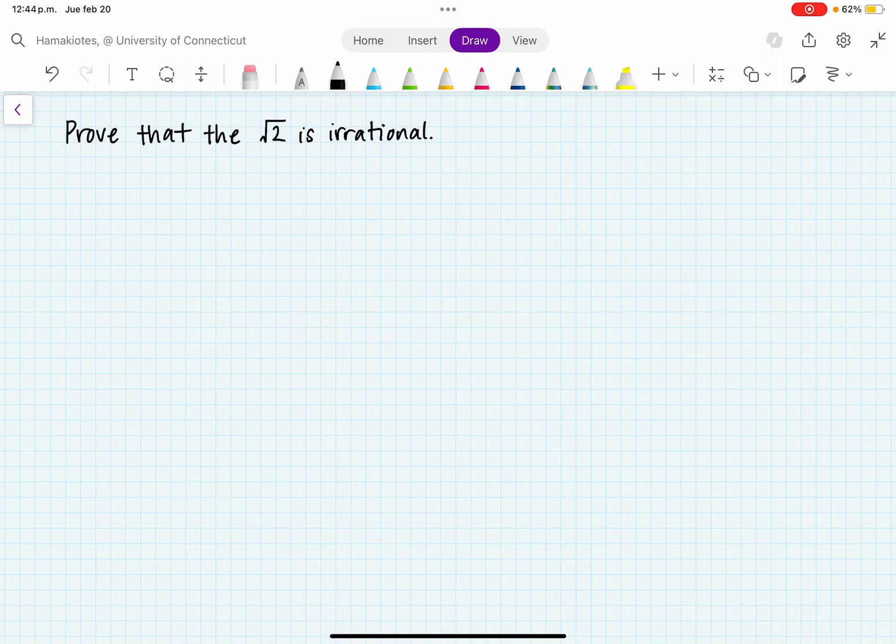In this video, we are going to prove that the square root of 2 is irrational. So what is the square root of 2? The square root of 2 is approximately 1.41421356237, and it goes on and on and on. So how do we prove that this number is actually irrational?